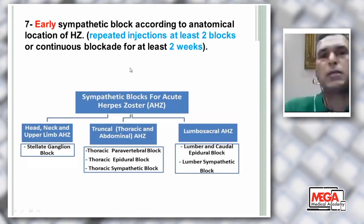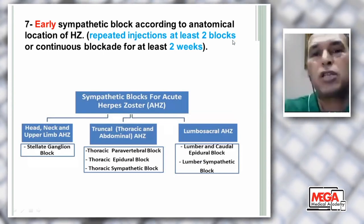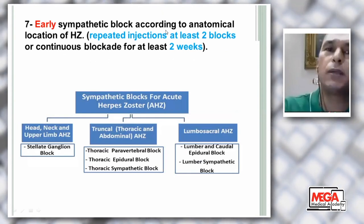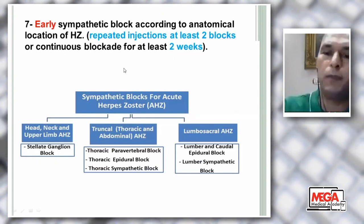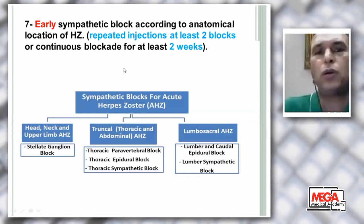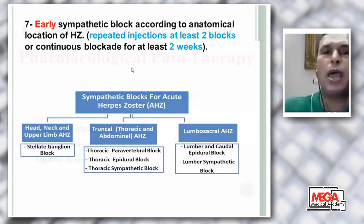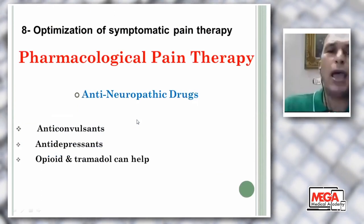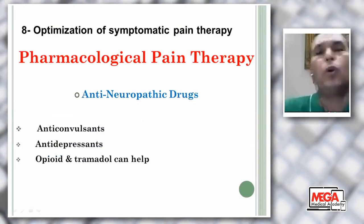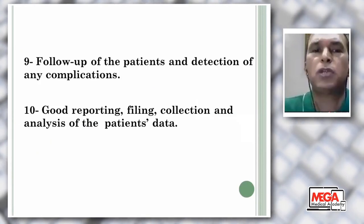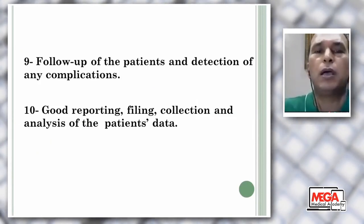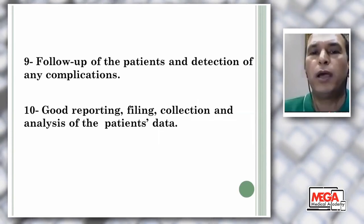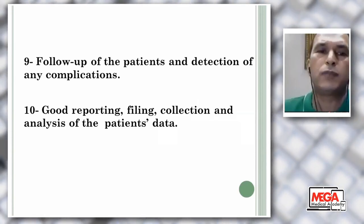Sympathetic blockade can be used according to region: head and neck — stellate ganglion block; trigeminal — paravertebral block; epidural; thoracic sympathectomy; lumbosacral — caudal epidural or lumbar sympathetic blockade. This is repeated injection — at least two blocks, or continuous blockade for two weeks. Optimization of symptomatic pain therapy includes anti-neuropathic drugs, antidepressants, anticonvulsants, opioids, and tramadol. Follow-up of the patient and detection of complications like keratitis, and good reporting for data collection and analysis.